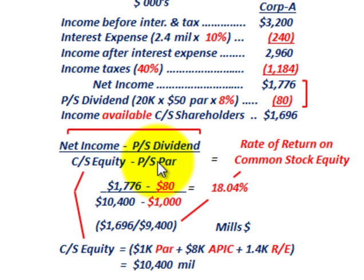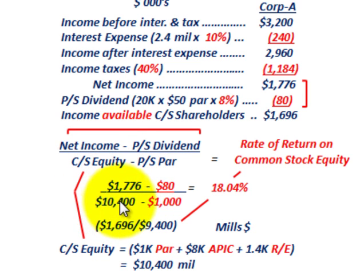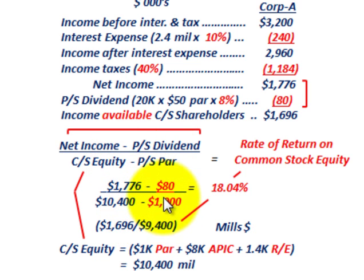From the common stock equity, we have to subtract out the preferred stock par value, which was $1,000,000. So we subtract that from the common stock equity we calculated. When dealing with the rate of return on common stock equity, we take net income divided by common stock equity, but we subtract the preferred stock dividend in the numerator, and subtract the preferred stock par value from the common stock equity in the denominator.